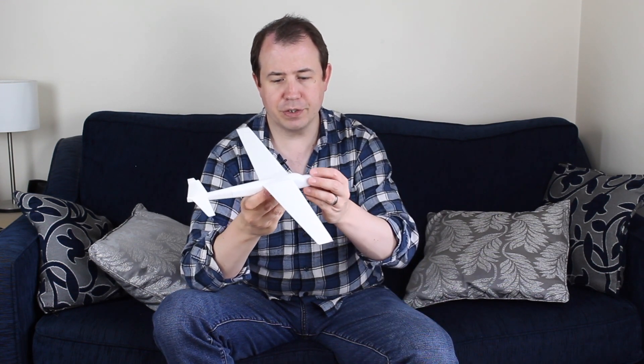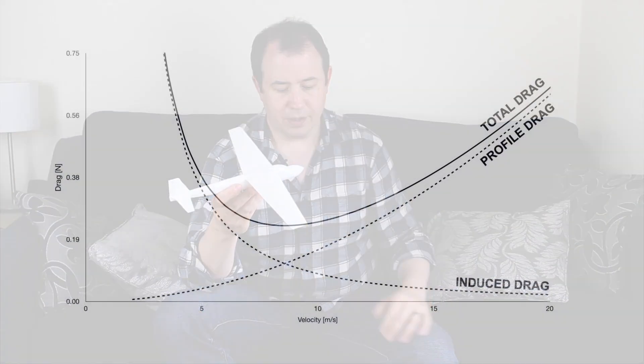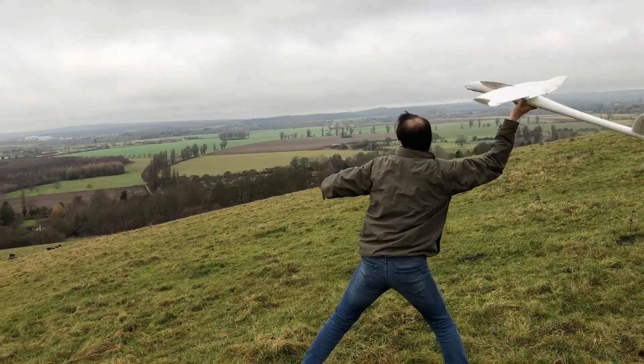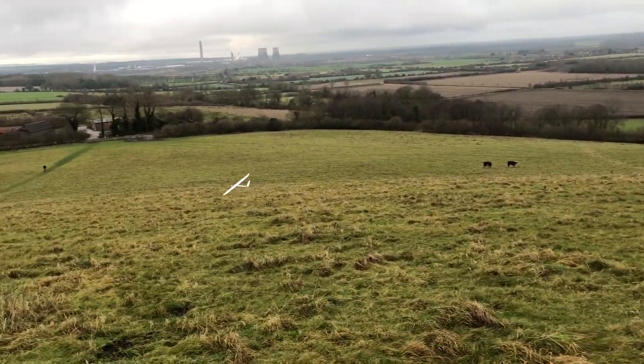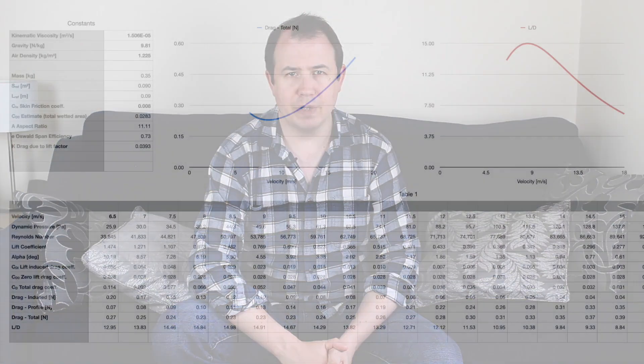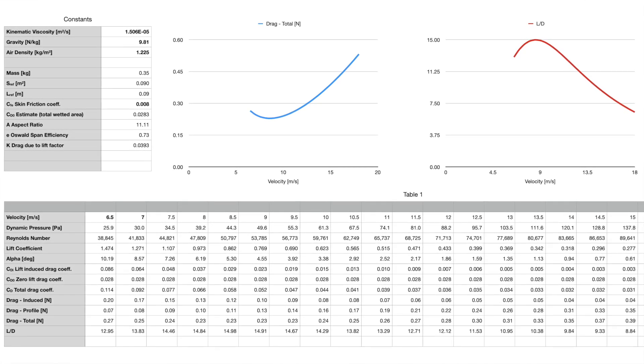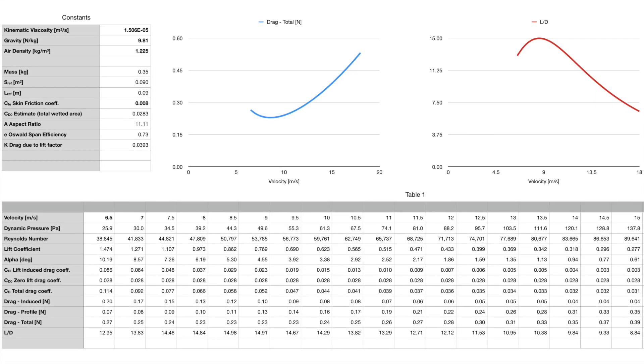So why do all these calculations? These calculations enable me to predict certain aspects of the aircraft — most usefully, how much thrust I'll need to keep it in the air. I also want to see how accurate I can be with my design, so once I've built it I'll be testing it against reality. I predict it will have a maximum lift-to-drag ratio of about 15 at a speed of 9 meters per second, with a stalling speed somewhere around 6 meters per second. The maximum speed will depend on how big a motor I put in it.